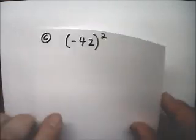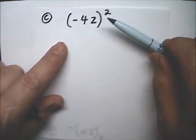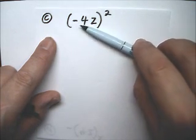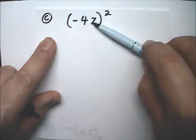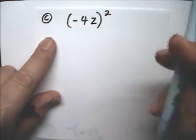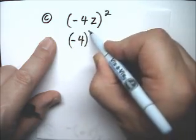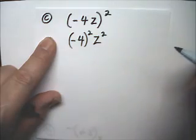So, C is negative 4 z squared. We've got to ask ourselves, how many of each of these am I going to have? I'm going to have 2 negative 4s and 2 zs. So, this is negative 4, I need 2 of them, and z squared.